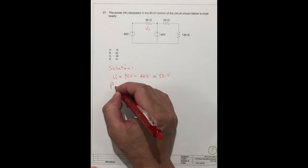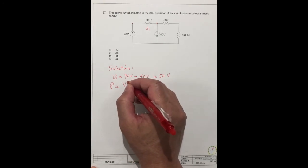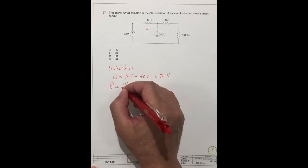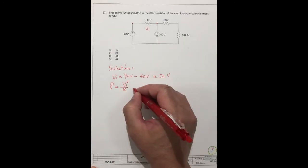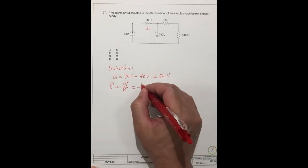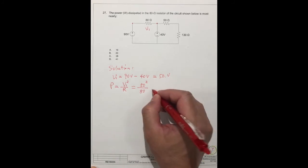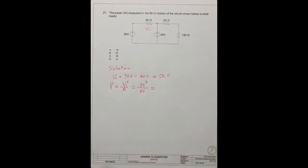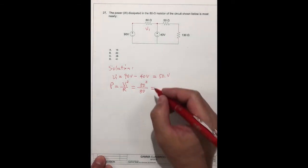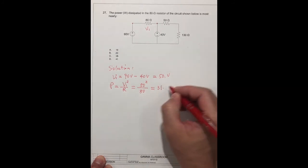The power dissipated is V squared divided by R. We can get 50 squared divided by 80. How much we can get? We can get 31.25 watts.